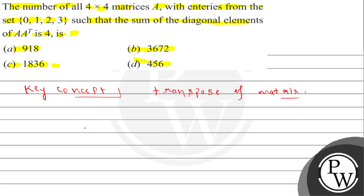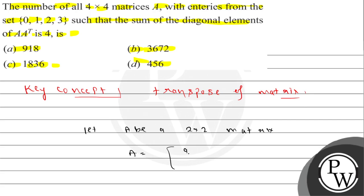Let's suppose we have a 2×2 matrix example first. If we have a 2×2 matrix A equal to entries A1, A2, A3, A4 — so we have 4 elements in this 2×2 case.